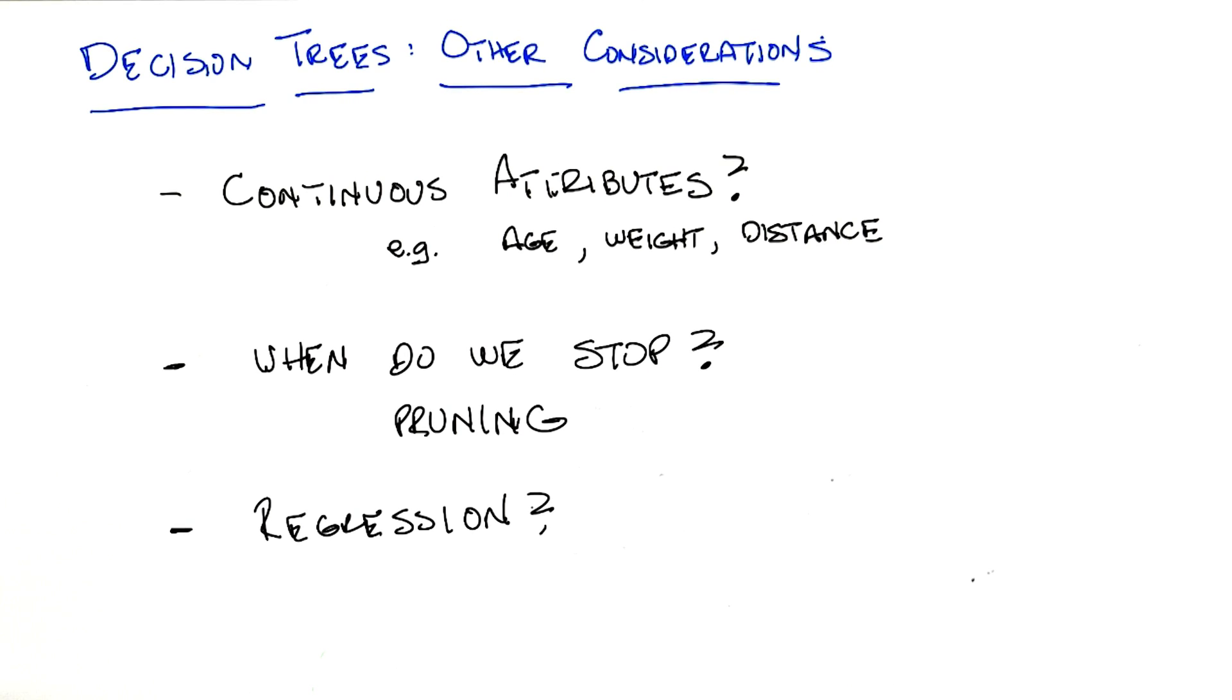Right, maybe the outputs are all continuous, maybe the outputs are discrete, maybe they're a mix of both. Well, it certainly seems like our rule of using information gain is going to run into trouble, because it's not really clear how you measure information on these continuous values. So I guess you could measure error some other way.